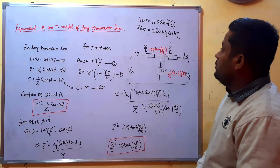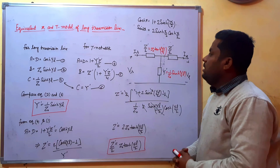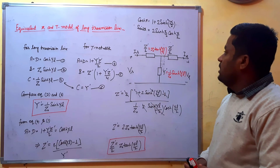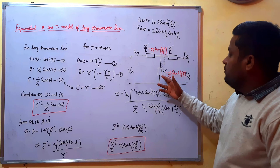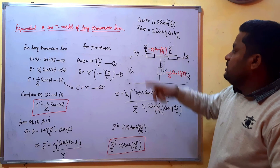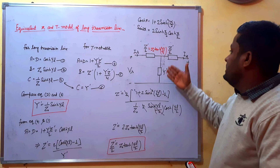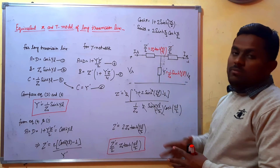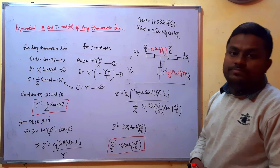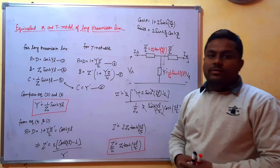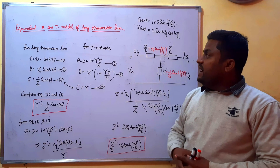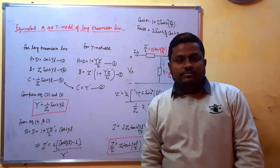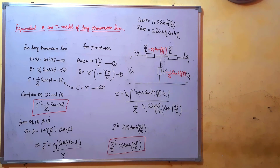So this is all about the T equivalent model for a long transmission line, in which we derived the values of Y' and Z'/2 in terms of Z₀, sinh(γL), and tanh(γL/2). This is all about the pi and T model for long transmission line. Thank you very much.